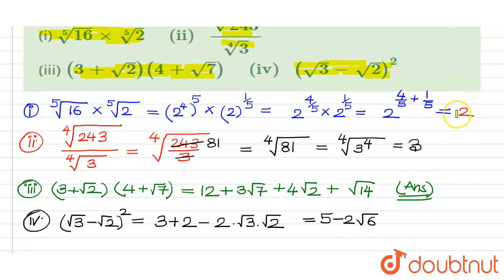So these are the answers. The first one is 2, second one is 3, third one is 12 plus 3 root 7 plus 4 root 2 plus root 14, and the last one is 5 minus 2 root 6. Hopefully you understand the video.